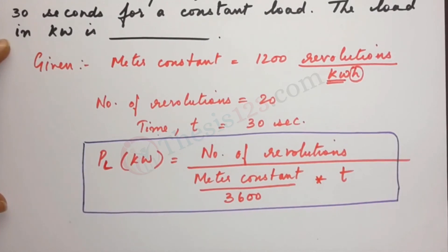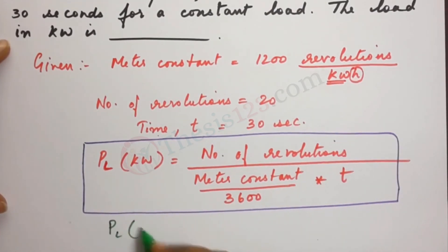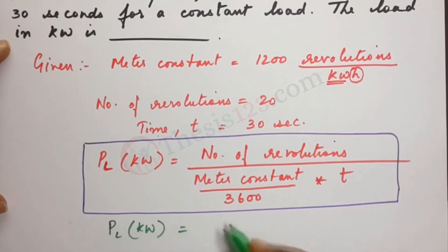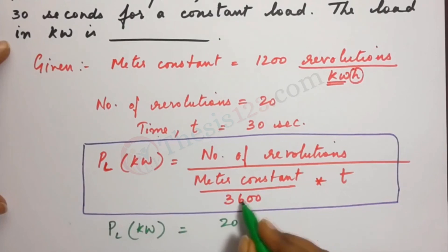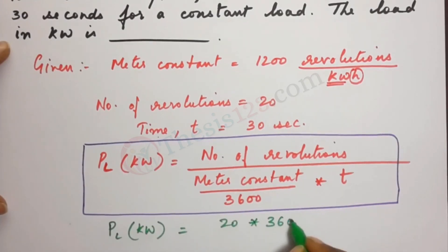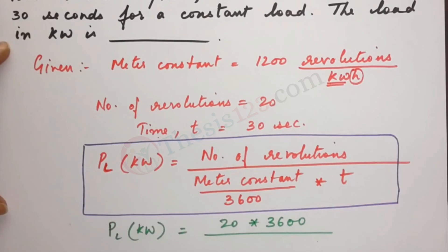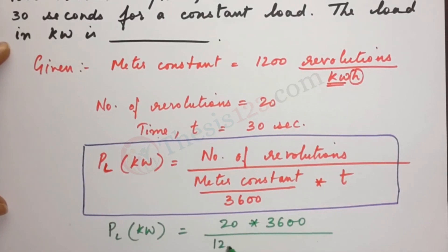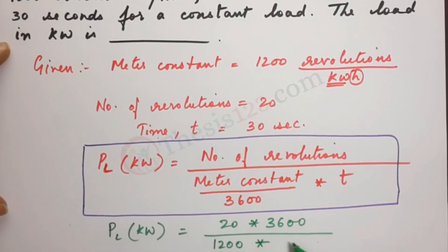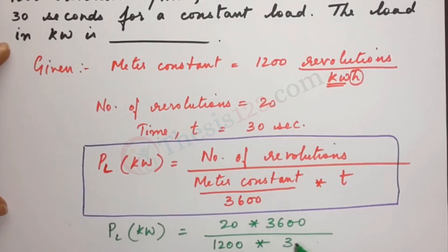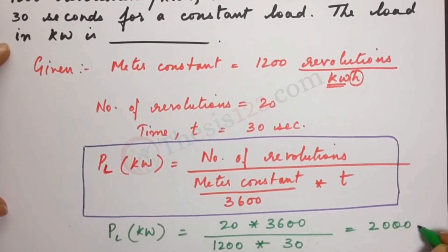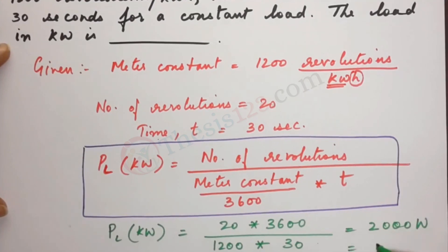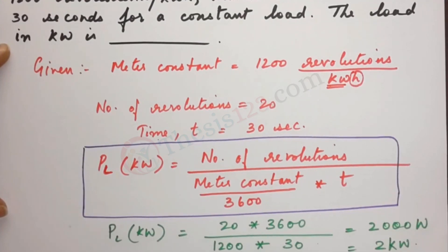Okay, so let's substitute the values now. We will have PL kilowatts is equal to 20 number of revolutions, and since we have 3600 that goes up to the numerator divided by the meter constant of 1200 into time we have 30 seconds. This gives us 2000 watts which is in terms of 2 kilowatts.